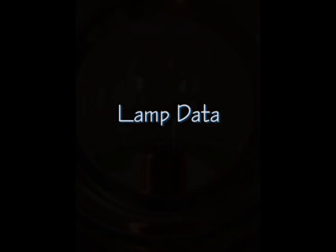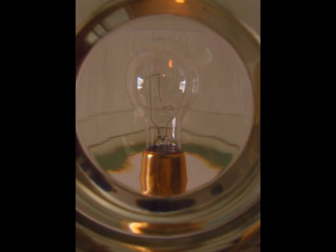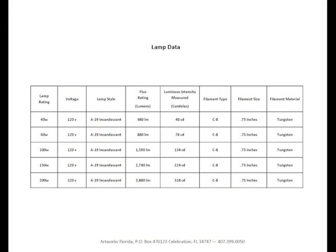The lamp specification is the first data to be recorded. The wattage, voltage, lamp style, filament style, and lumen output are all specified by the manufacturer. The candela output was recorded with the light meter. The 100 watt bulb has a luminous intensity output of 134 candela, which we will refer to in a later test.